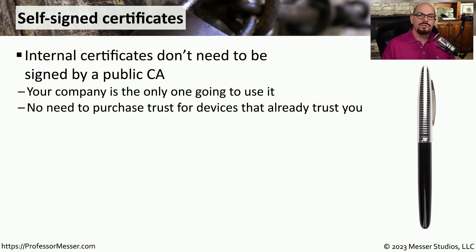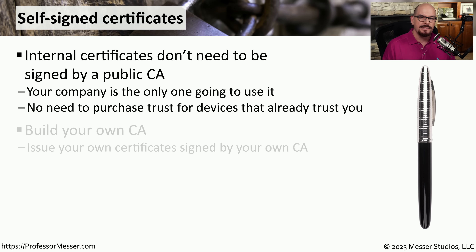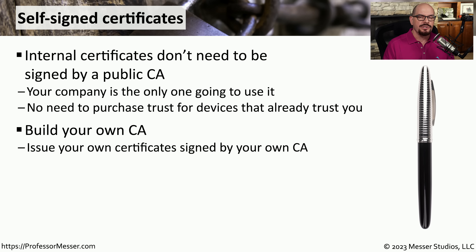Now we've created our own certificate authority for everything internal to our organization. If we have an application or a user that needs a certificate, we don't have to go outside to a public CA. We can simply use our internal CA to create those certificates. The process for creating a digital certificate, having the certificate authority digitally sign it, and distributing it back to the end user is exactly the same as you would use with an external CA.